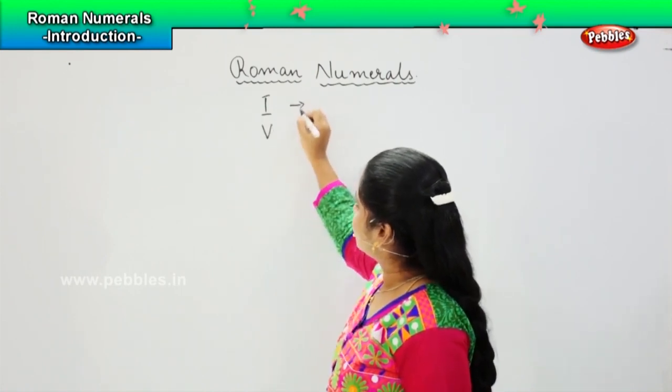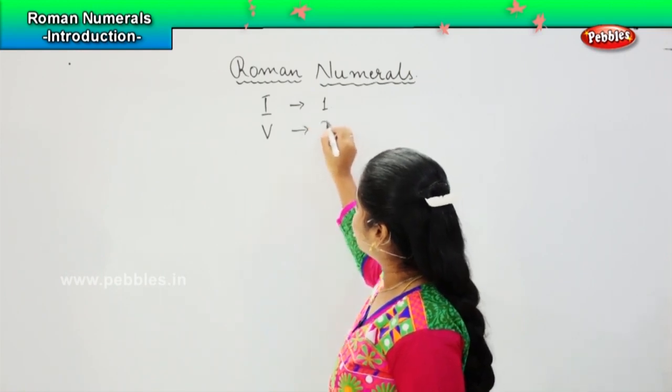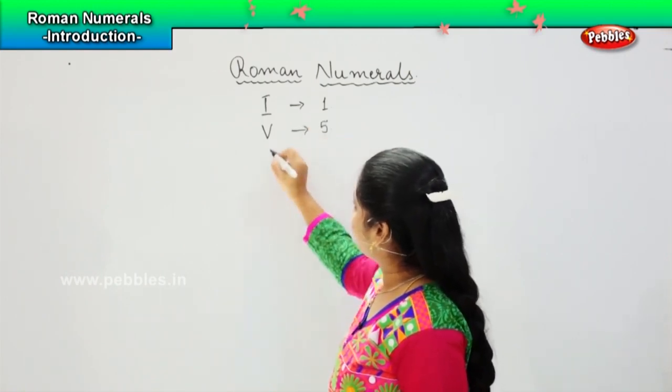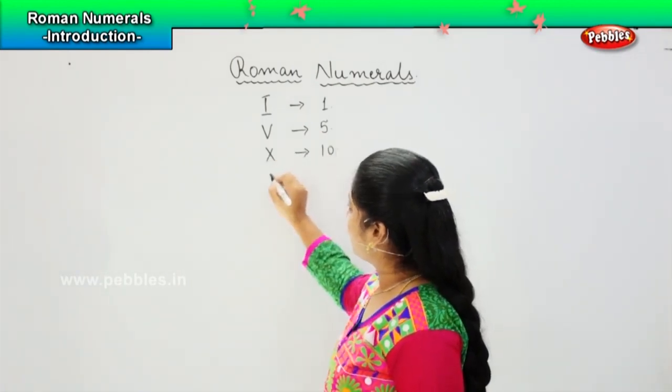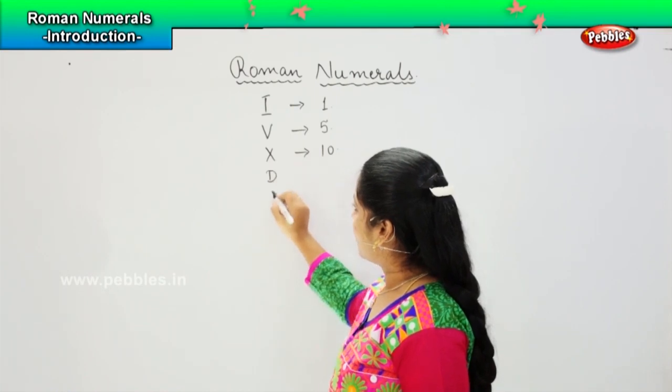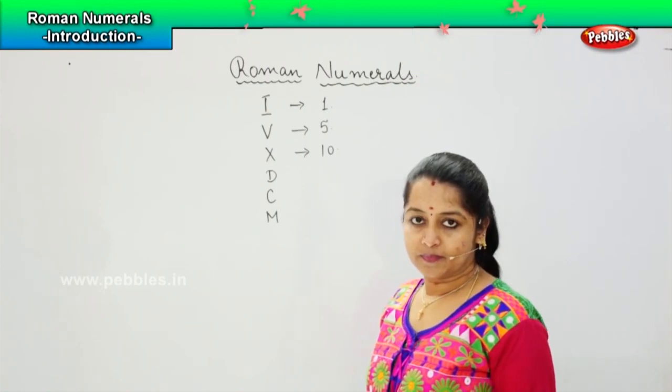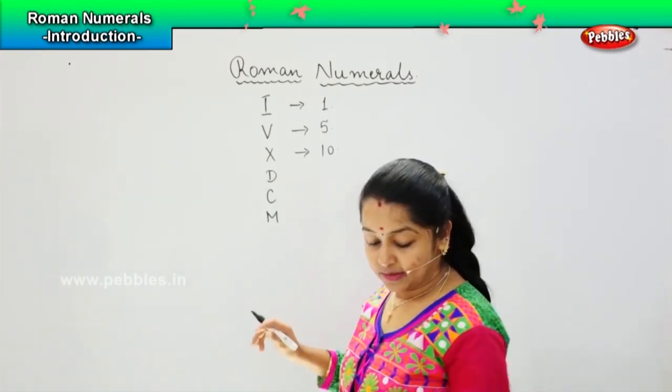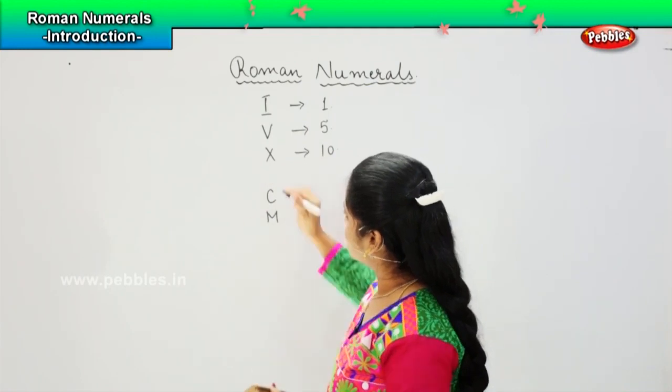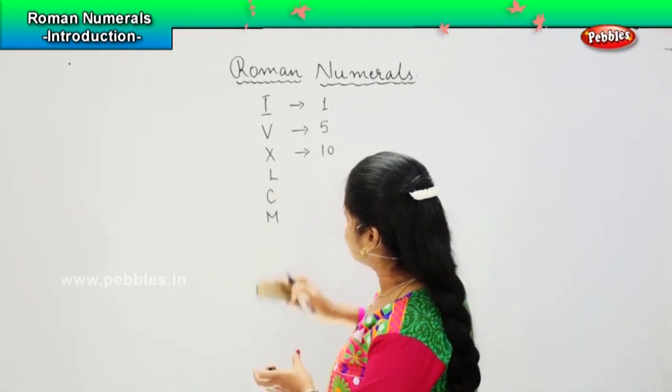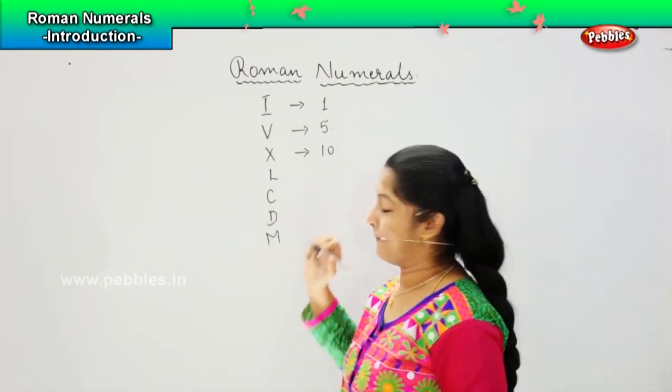So I is represented as 1, V is represented as 5, X is represented as 10. Then you have D, you have C, you have M, and one more is there which is L. So in order: L, C, D, and M.